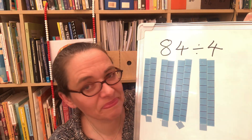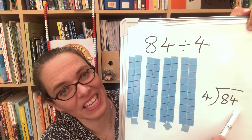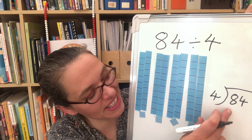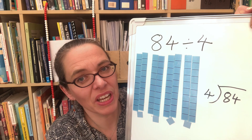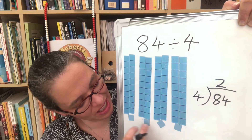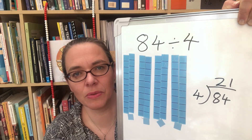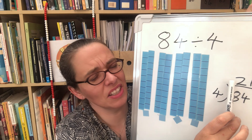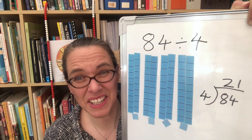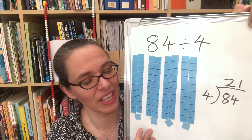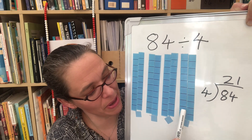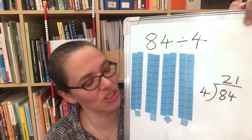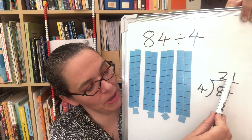We can see the answer is 21. If we then notate that: the 84 goes in the division, four is the number we're dividing by, and we're sharing fairly — so if we've got eight tens and we share them fairly between four people, each person gets two tens, and then our four ones, each person gets one one, so our answer is 21. This visual image links straight back to the multiplication we would use to check our answer: 21 times 4 should give us back our 84.